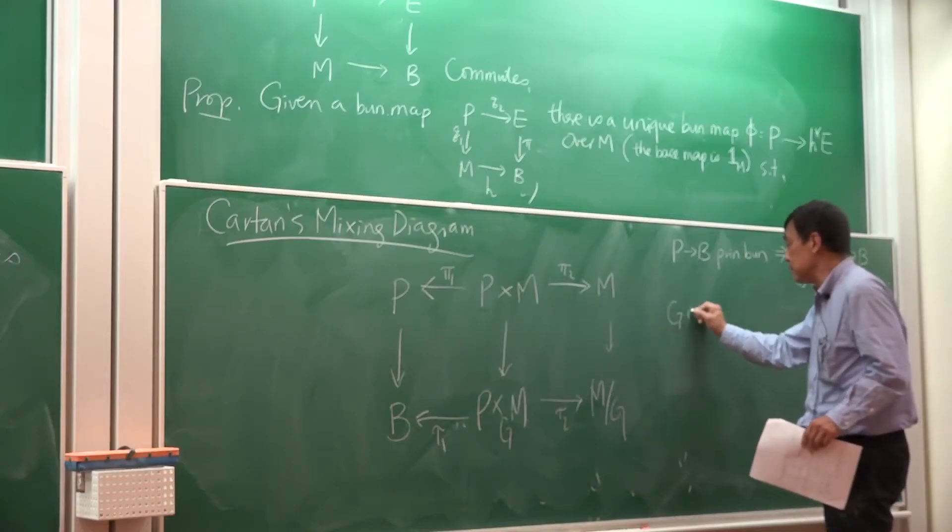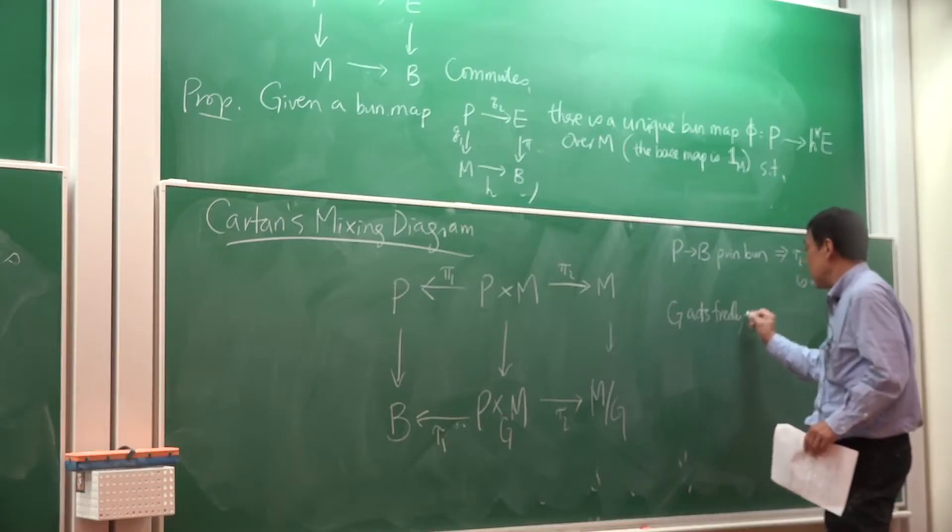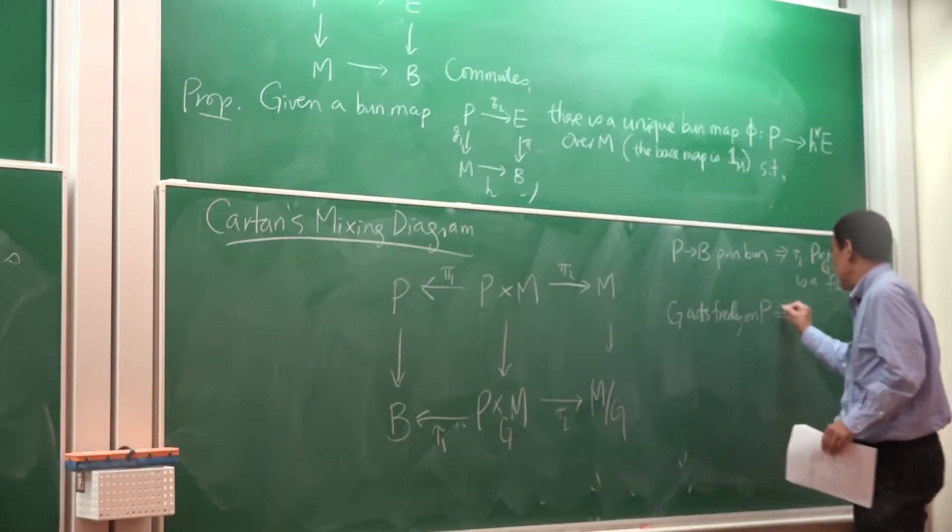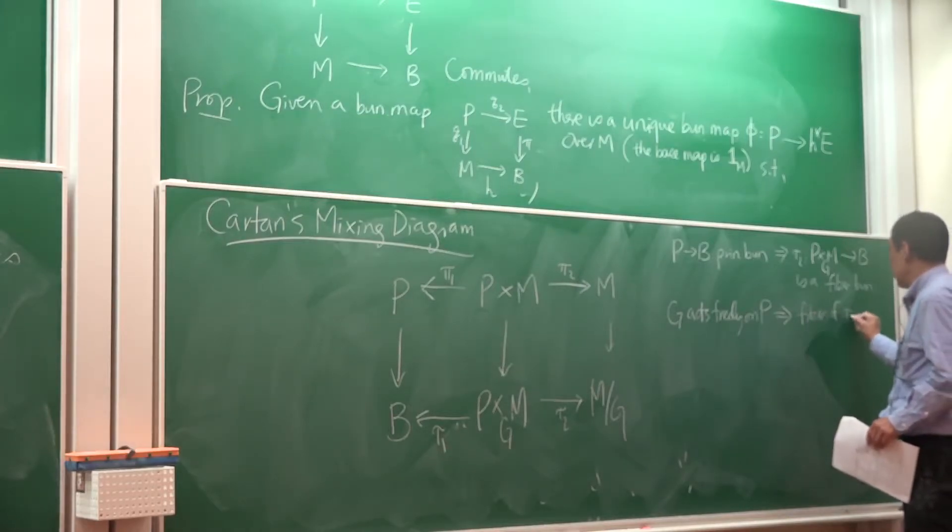On a principal bundle, G acts freely. G acts freely on P implies that the fiber of tau 2 is M, okay?